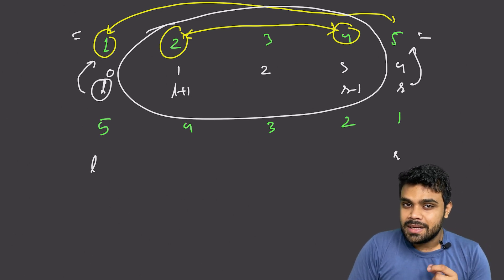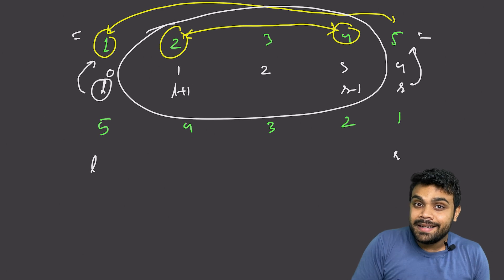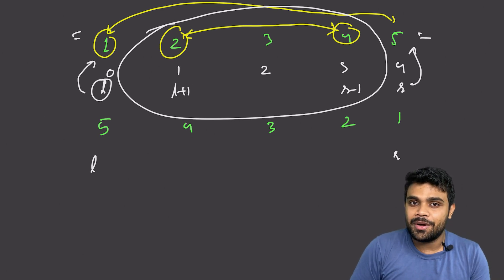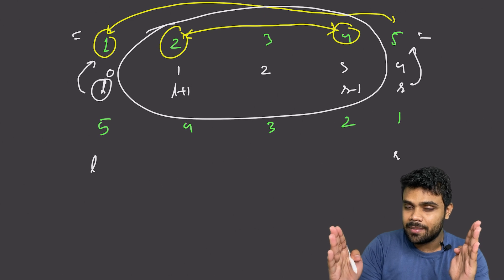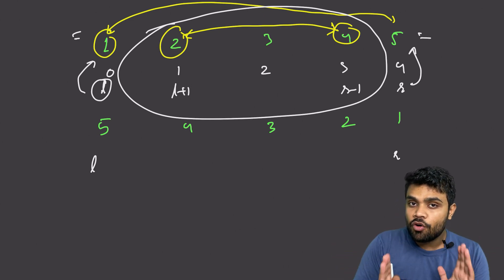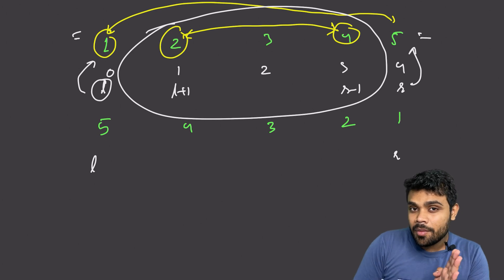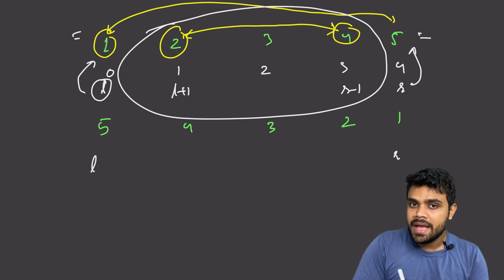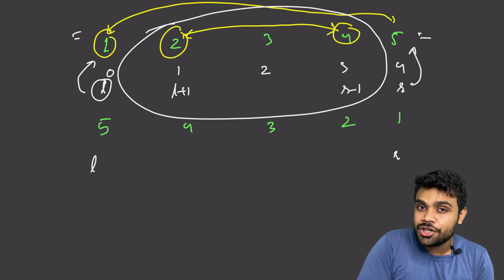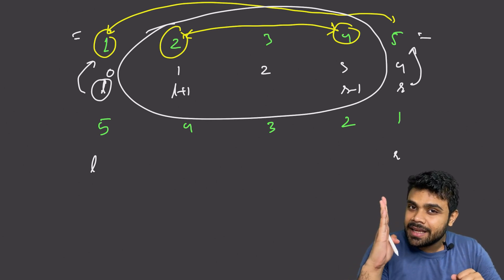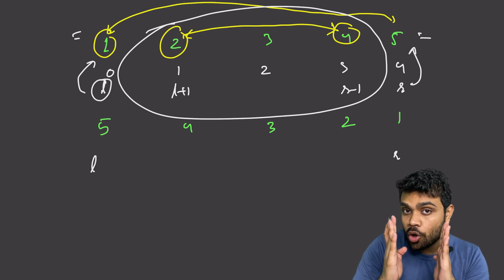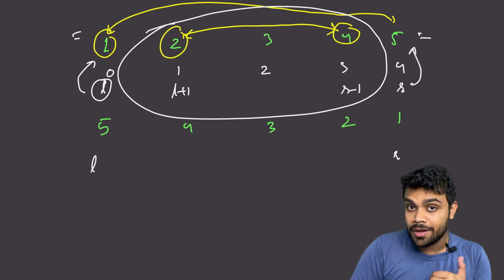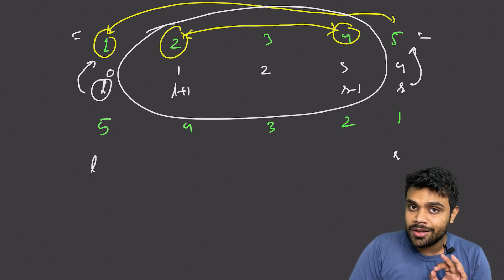Step two: the small task I will do is swap the element at position l with the element at position r — the leftmost with the rightmost. Step three: recursion handles everything from l plus one to r minus one. Step four, the base condition: the left pointer keeps incrementing and the right pointer keeps decrementing. When they collide — when l is greater than or equal to r — we stop. That is our base condition.